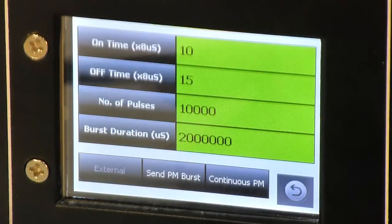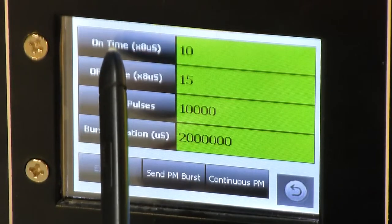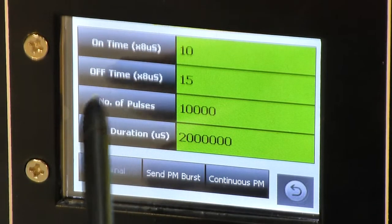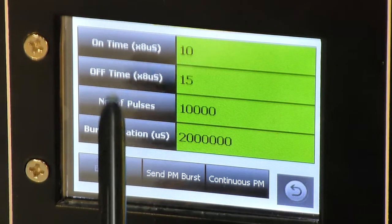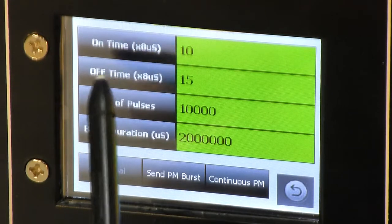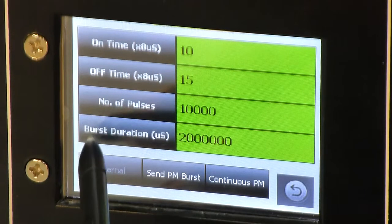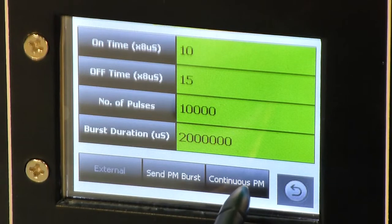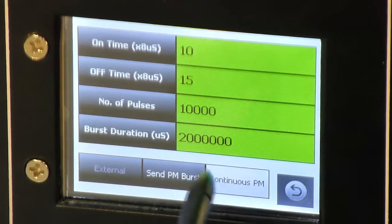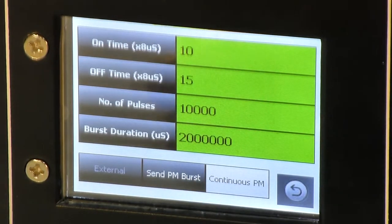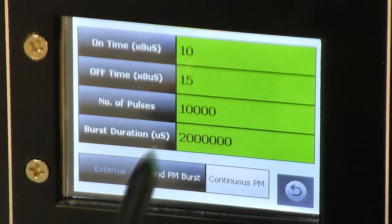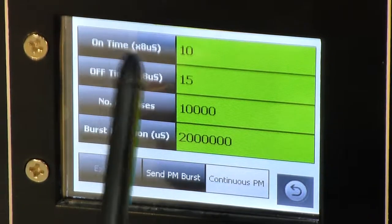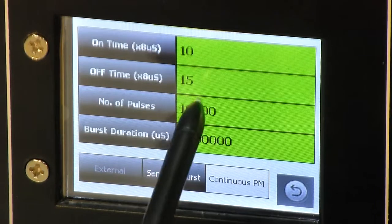On pulse modulation scheme, you will see on time for the pulse, off time for the pulse, number of cycles and depending upon the on time, off time and number of cycles, burst duration will be calculated. Burst duration is used for sending PM burst and for continuous PM, output will be continuously modulated with a PM pulse of on time and off time.